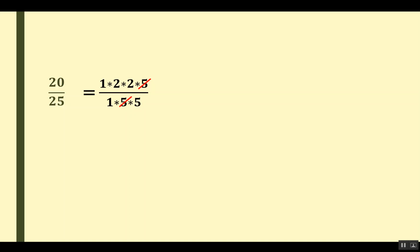We will cut 5 from the numerator and denominator. What we are left with in the numerator is 1 × 2 × 2, and in the denominator, 1 × 5. So it will give us 4 out of 5. So friends, the simplified value of 20 out of 25 will be 4 out of 5.